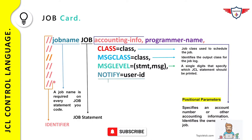Additional job card parameters used in specific situations include: TIME (to provide maximum time allocation, useful when a job fails due to a time exception), REGION, RESTART (to restart a job), and TYPRUN (for special job processing). We will discuss all these parameters in the JCL tips and tricks section.